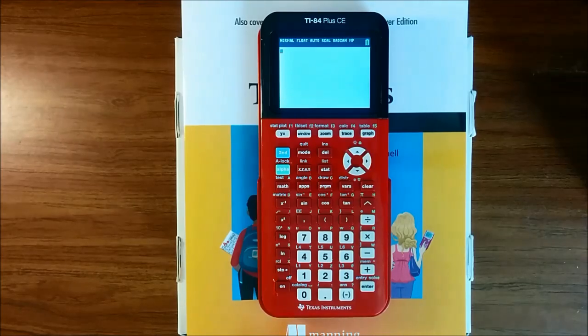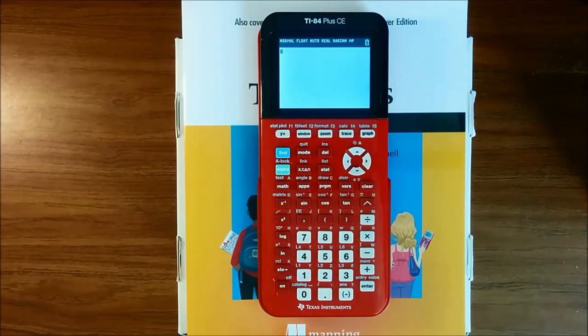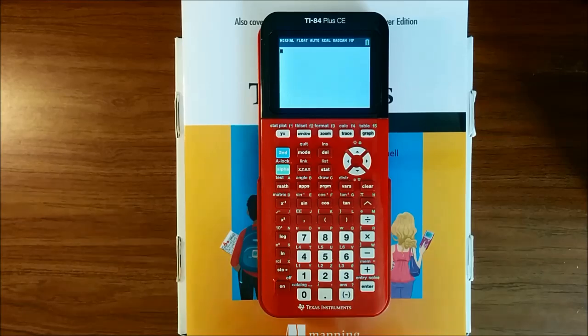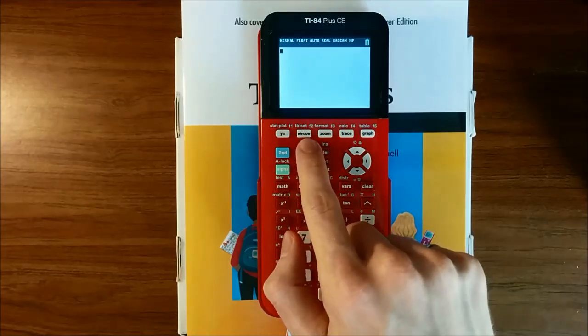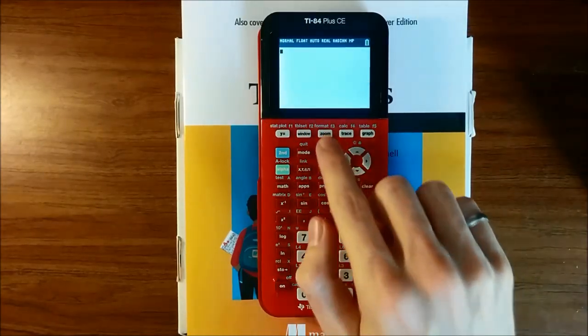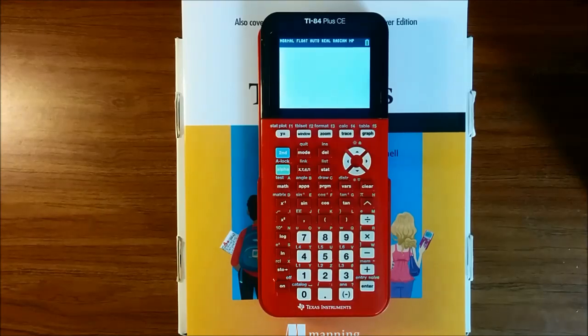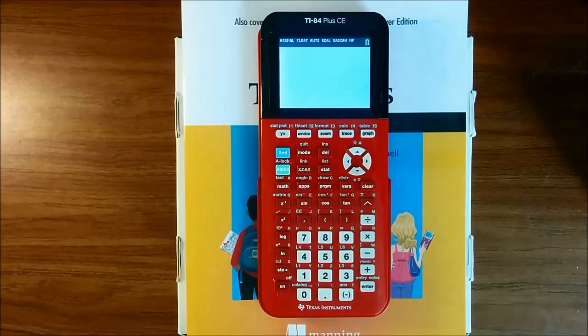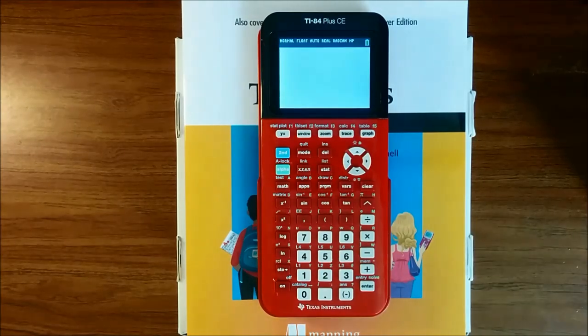Let's get started with your very first graph. To access the graph tools on your TI-84 Plus CE, or indeed any TI-84 Plus family calculator, you'll use the five keys at the very top of the keyboard. The Y equals key takes you to a menu where you can enter equations to graph. Window lets you change the bounds of the screen. Zoom lets you zoom in and out on graphs, as well as reset to a standard zoom setting. Trace lets you examine points along a graph. And the graph key simply shows you a graph of all of the equations that you've entered.